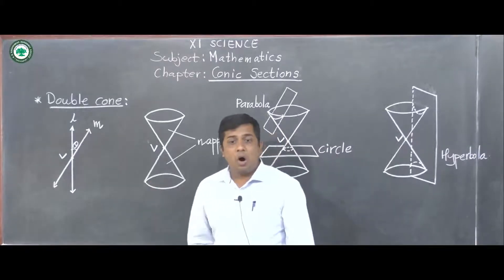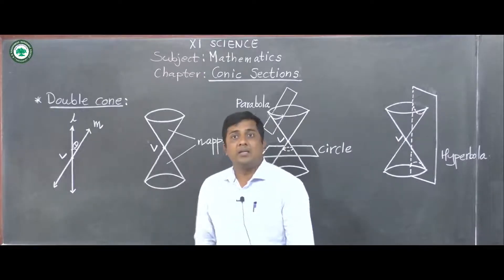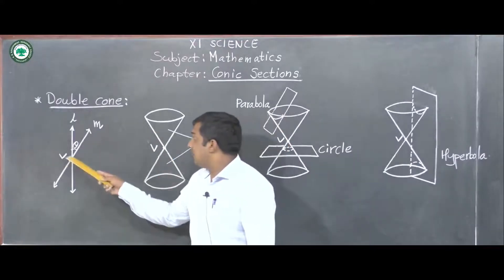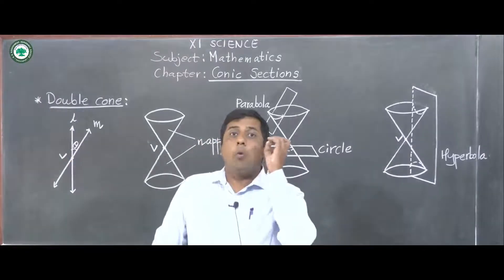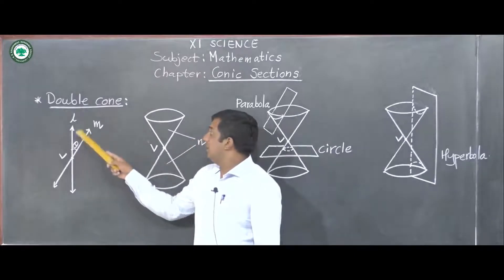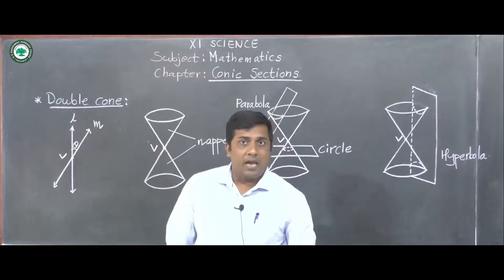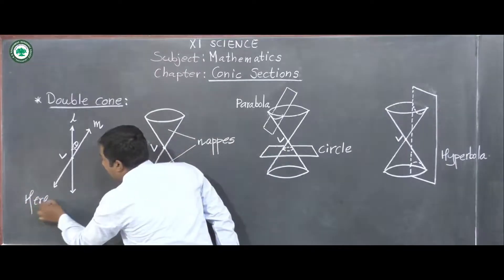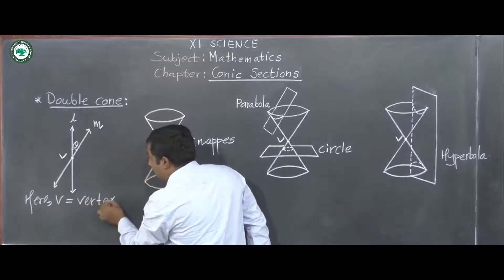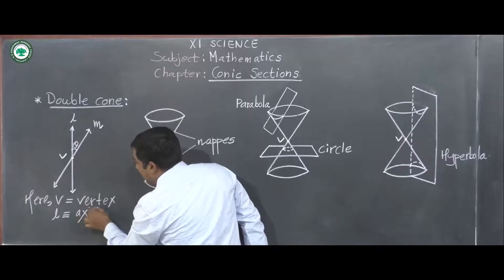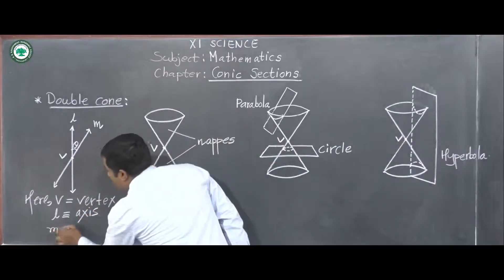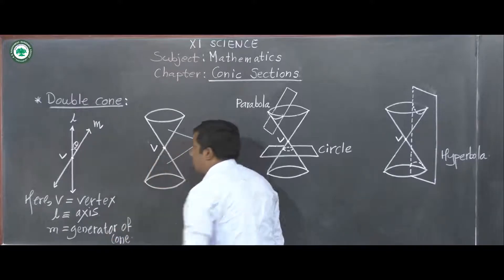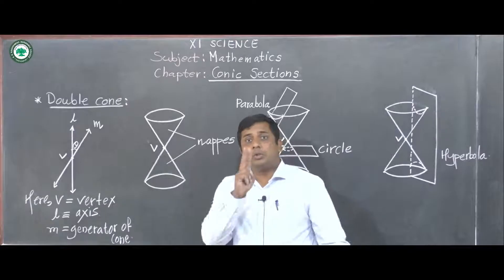By rotating in this way we get the surface of a right circular cone, which has two nappes — an upper nappe and a lower nappe. Here v is the fixed point called the vertex, l is the axis of the cone, and m is the generator of the cone.